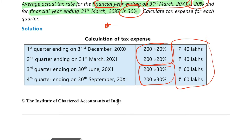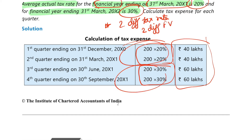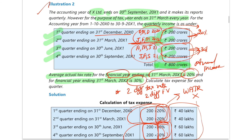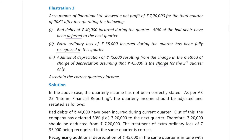The key point: if there are two different tax rates for two different financial years and some interim periods fall in one year and some in another, you directly apply the applicable tax rate. You should not find a weighted average tax rate in such cases.